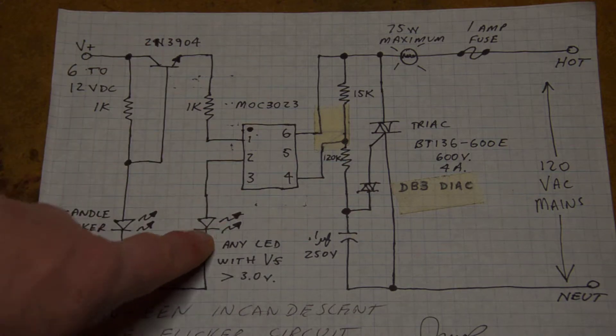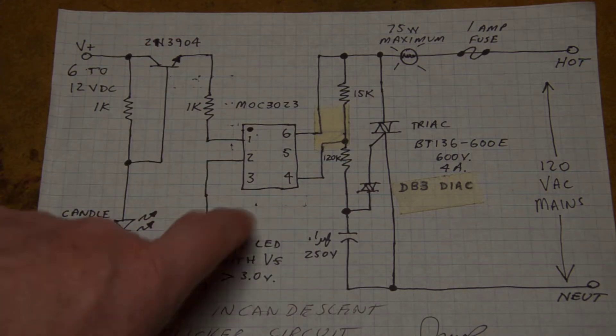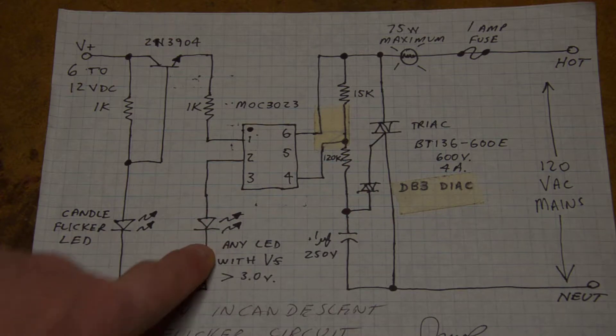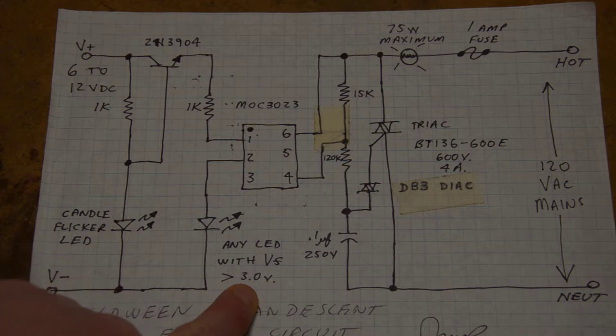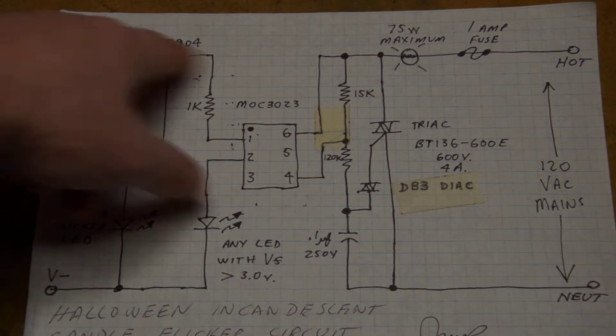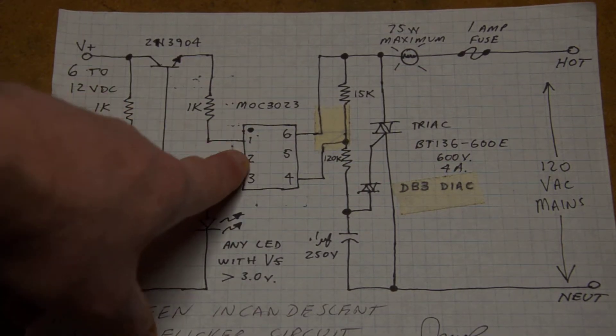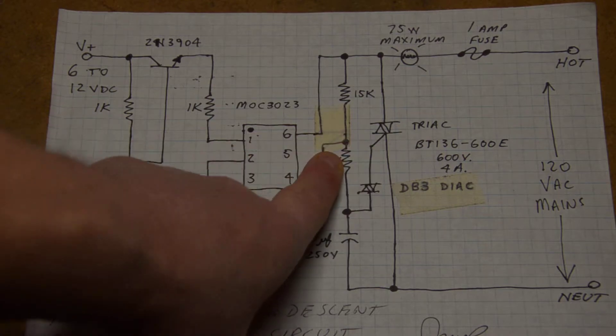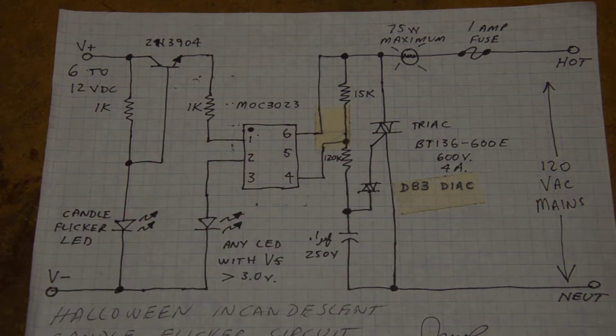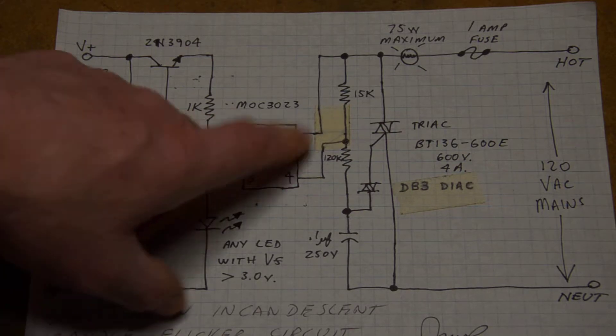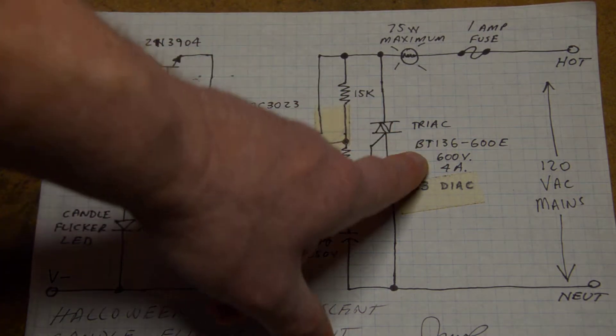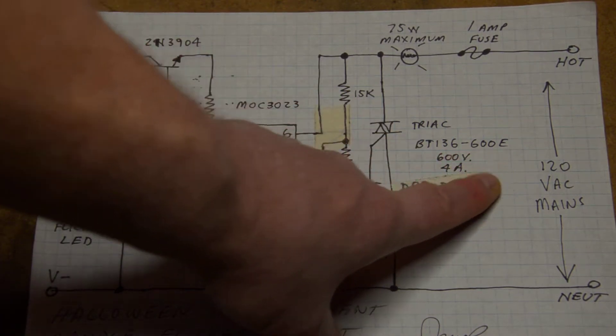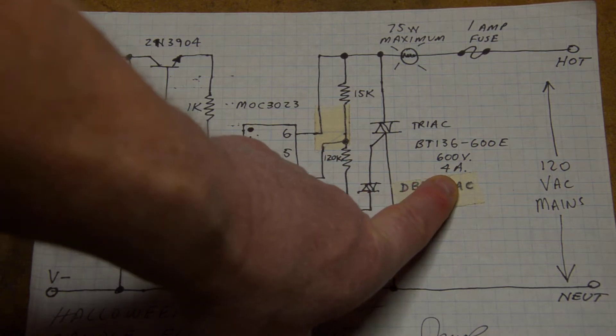You need this LED to overcome that voltage. This LED should be any LED that's going to have a forward voltage drop of greater than three volts. This whole circuit is controlling the triac output. Now the triac output of the optocoupler controls the input of this power triac. The power triac is a BT136-600E rated for 600 volts and 4 amps.